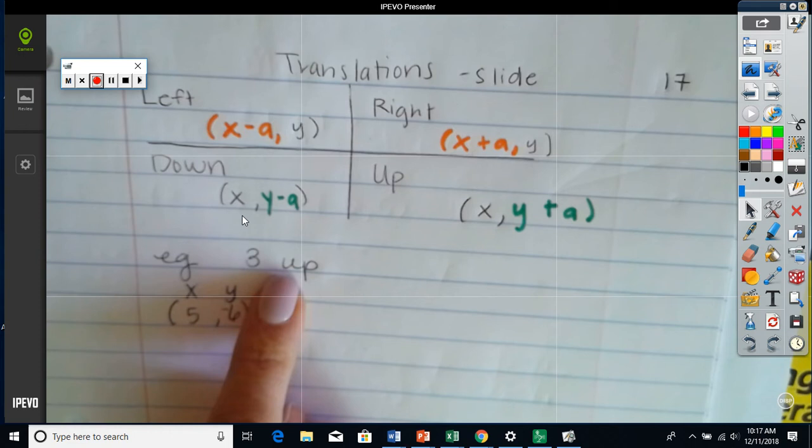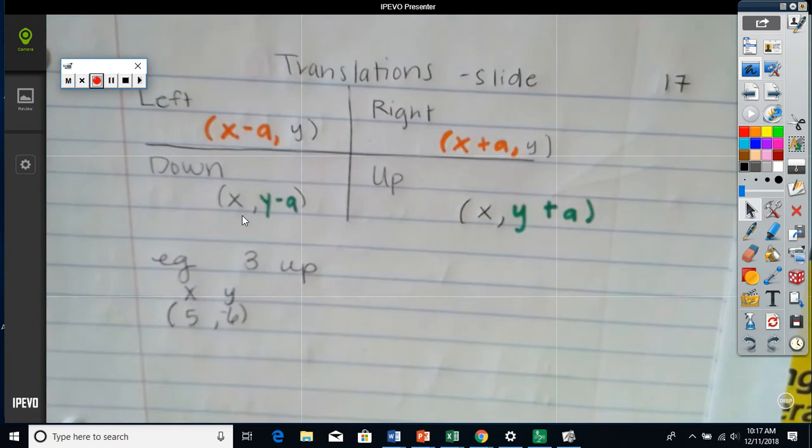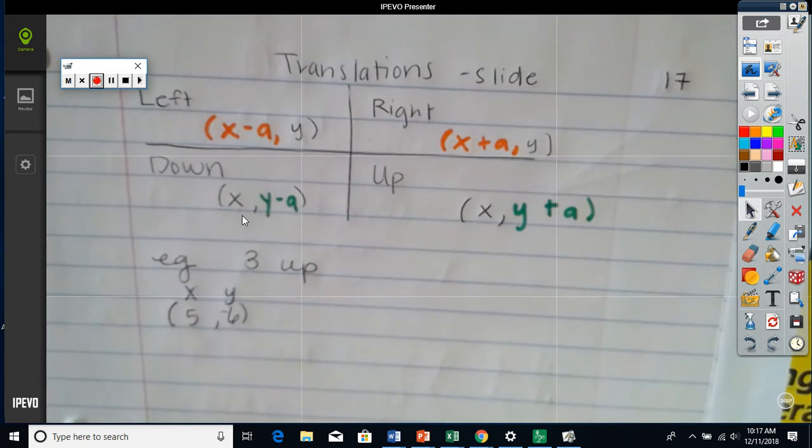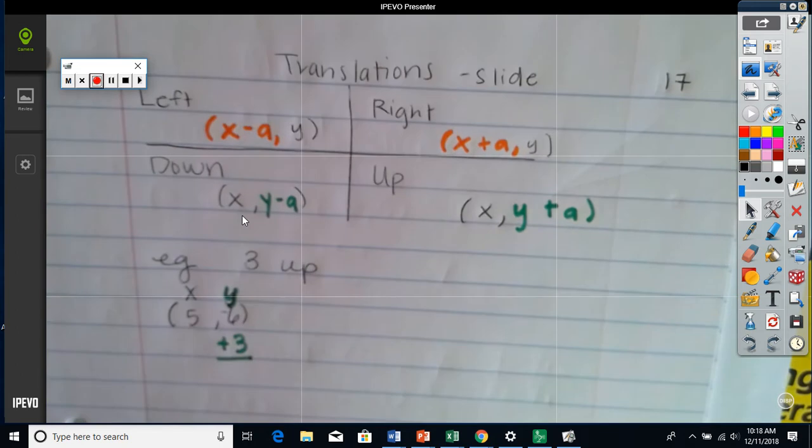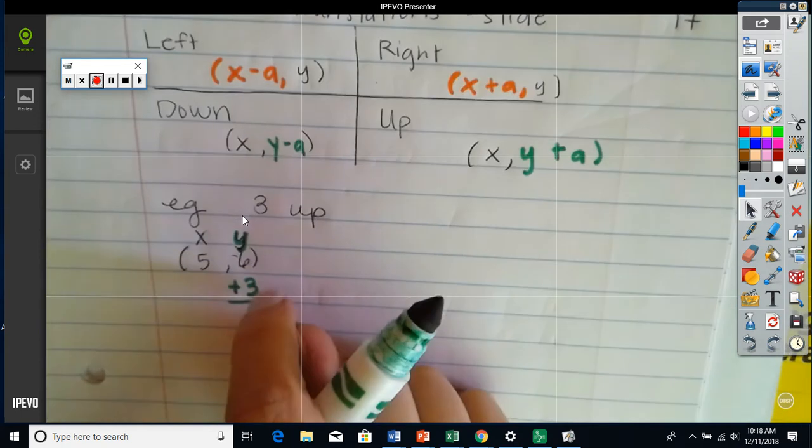If I'm moving up, Fahiti, do you remember if it's up, is it going to change the X or the Y if I move up? The Y. The Y. So for this one, Emily, is it going to be plus or minus three? If I move up. You're going to change the Y by doing plus. Okay, Mr. Ali, what do you get? Negative six plus three.